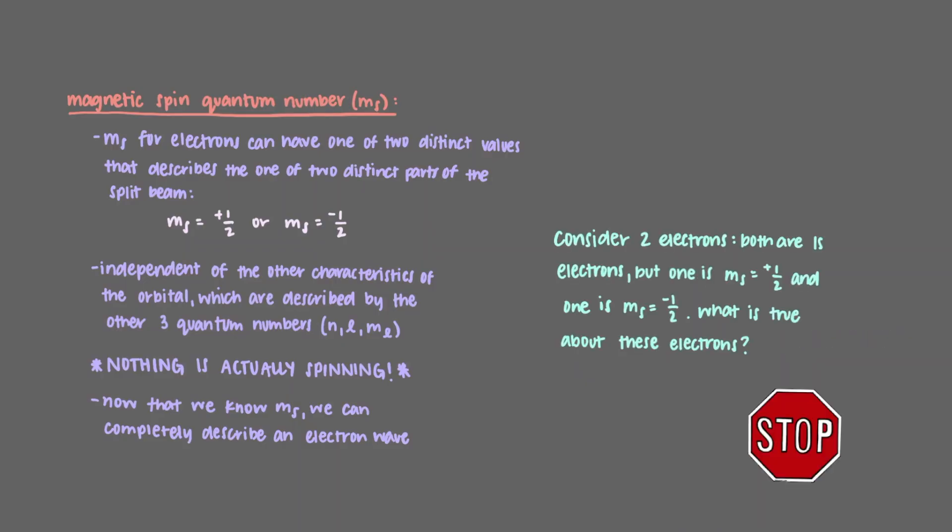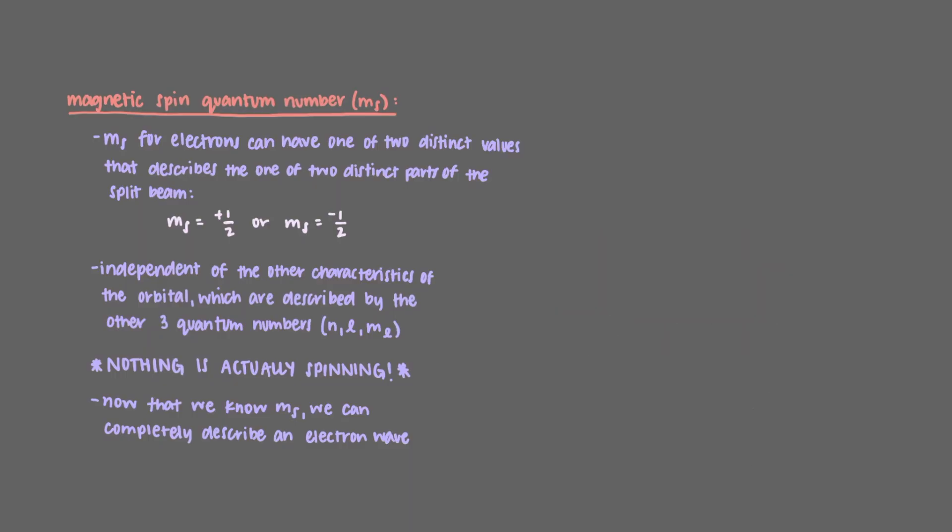Consider two electrons. Both are 1s electrons, but one is m sub s equals plus one-half and one is m sub s equals negative one-half. What is true about these electrons? That's right, none of these are true. You absolutely can have two 1s electrons, each with different values of m sub s.